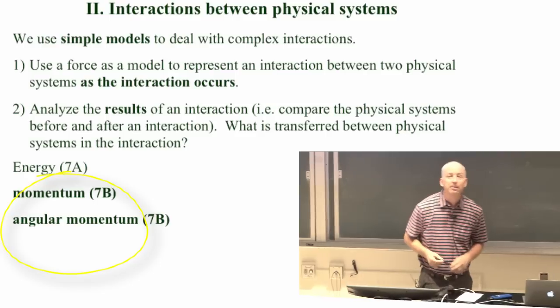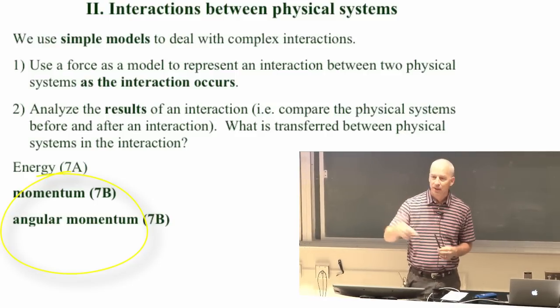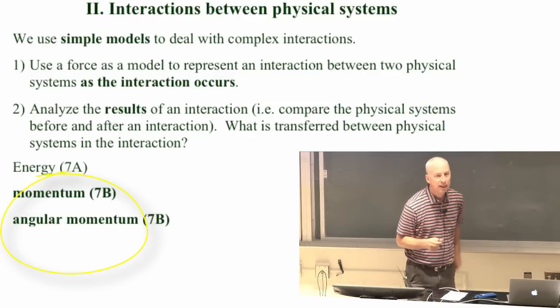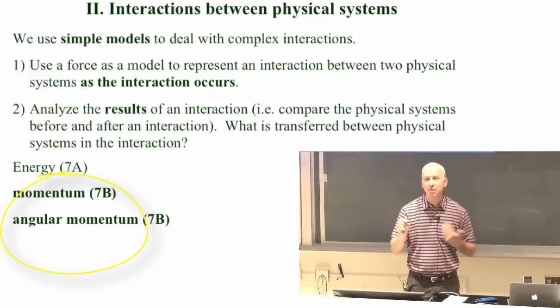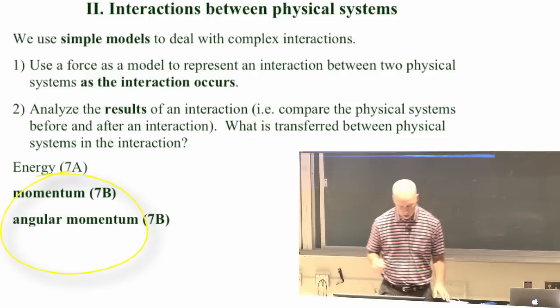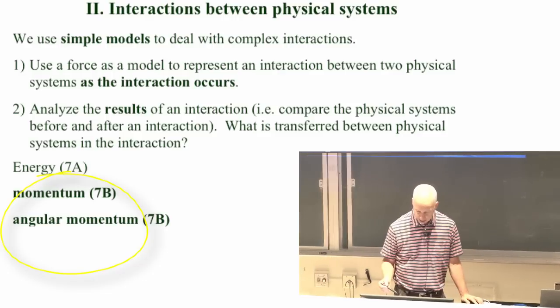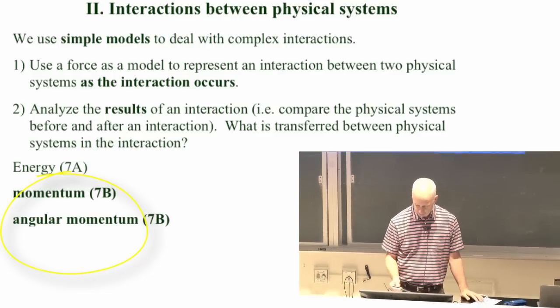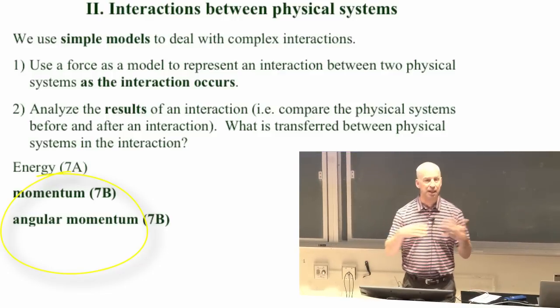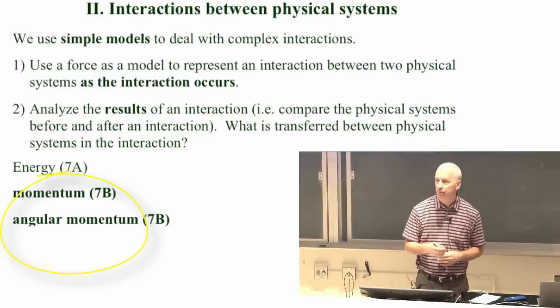So angular momentum, which is a rotational momentum, is coming up and that'll be the last kind of conservation law that we're going to talk about. The last kind of physical quantity that can get transferred between things because of interactions.